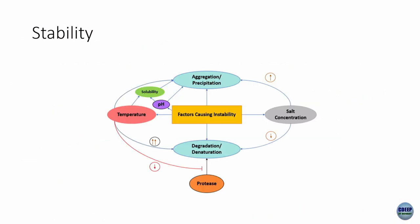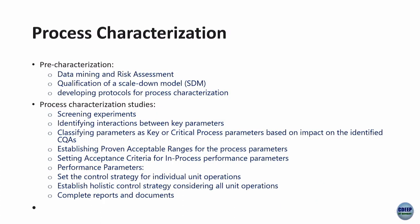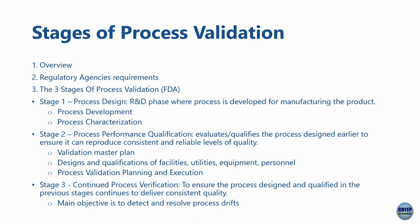Drug substance stability must be demonstrated during filing — at minimum three months is required, but more stable molecules are better from a marketing perspective. Tablets are stable for a long time, but liquid biologics like insulin are not, so formulation is critical. In process development, two regulatory steps are required: process characterization — understanding all factors contributing to variability — and process validation, where you define parameters, set limits, and do three runs that must all meet the defined criteria. Both are required for drug approval.